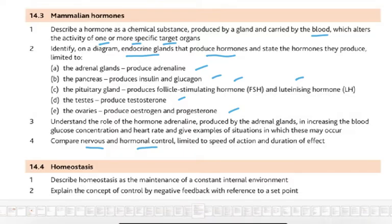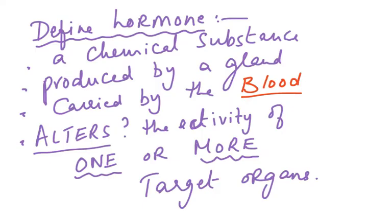In homeostasis we have to describe homeostasis as the maintenance of a constant internal environment and explain the concept of negative feedback. Define hormone as a chemical substance produced by a gland, carried by the blood, that alters the activity of one or more target organs.